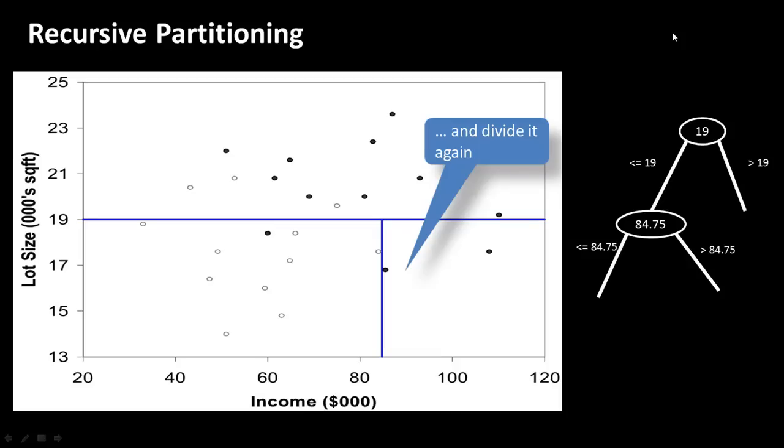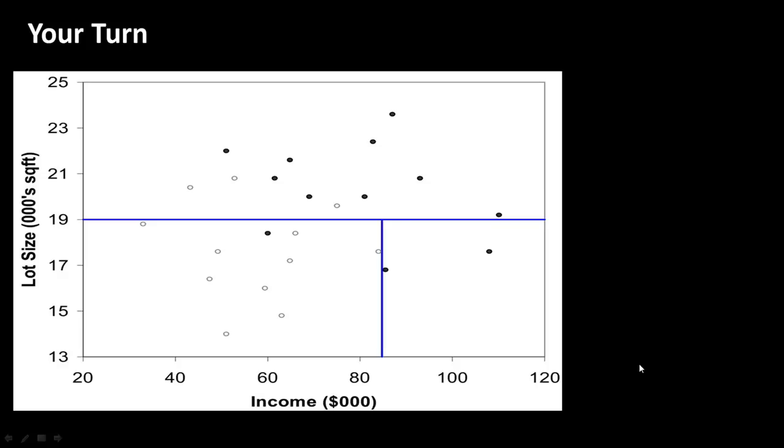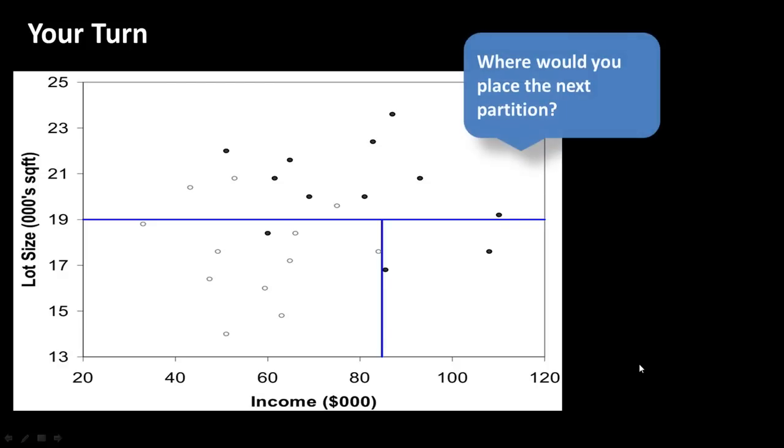So just to make things clear, to make sure you've understood what is going on, perhaps it might be a good idea for you to think about where you might place the next partition. You understand that what we are trying to do is to keep making partitions which are as pure as possible. So given that, looking at this particular diagram, which of the groups would you like to partition first? You've got three groups. One of them is already perfect, so there is no sense in trying to partition this any further. This is already perfect. We can let it be. So of these two, which one would you like to partition? On which variable would you like to partition it? And where would you like to put the partition?